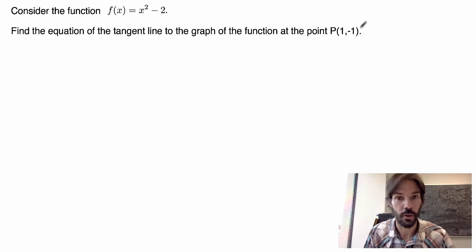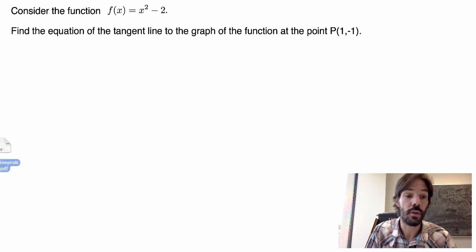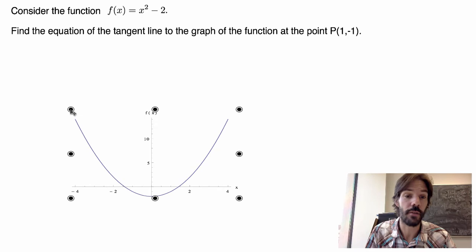Well, the first thing you should do whenever you're faced with a problem like that is to sketch the graph of the function to have an idea of what you're doing. So in this case, x² - 2 is just a very simple parabola that intersects the y-axis at the point (0, -2), so what we'll get is something like that for the graph of our function.